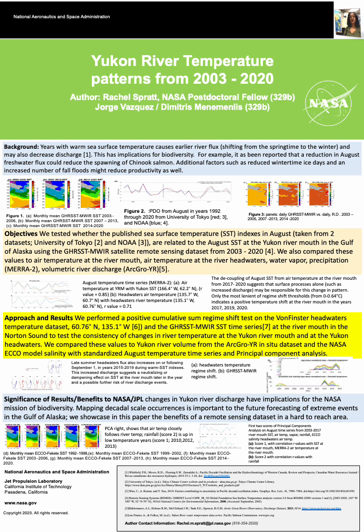When we look at August means of river temperature at the river mouth and compare these to air temperature, we get a very close correlation with reanalysis air temperature from MERRA-2 of 0.85 from 2003 to 2016. We also get a close coupling of in-situ river temperature at the Yukon headwaters with air temperature over the headwaters of 0.71.